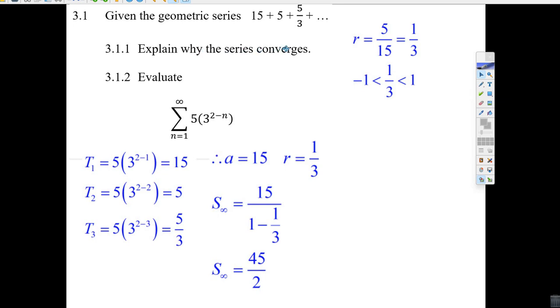Now it says, explain why this series converges. Well, the condition for convergence is that the number has to be between 1 and minus 1. So the answer is, 1 third is in between 1 and minus 1. And that's why it converges.